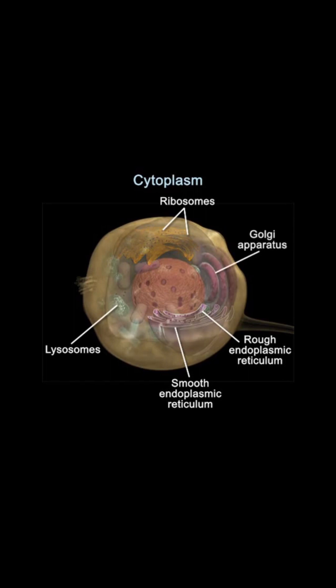The Golgi apparatus is a series of flattened membranous sacs. Proteins and other compounds synthesized along the rough endoplasmic reticulum are transported to the Golgi through channels formed by the endoplasmic reticulum. The Golgi apparatus chemically processes, then packages substances from the endoplasmic reticulum, and releases them to the exterior of the cell.